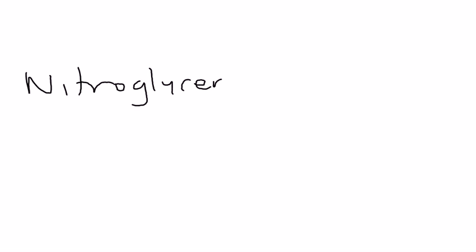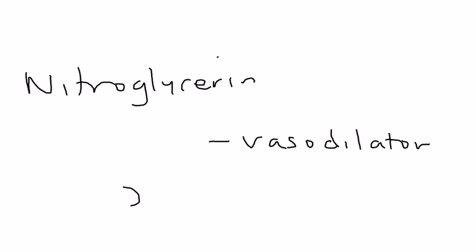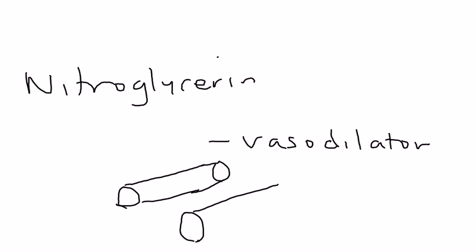The next drug — also very important — is nitroglycerin. Nitroglycerin is a direct vasodilator. If you have a narrowed coronary artery, it can vasodilate and make it bigger, giving you more lumen space for blood to flow through and supply oxygen to the heart muscle.